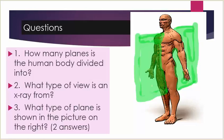Questions. Number one: how many planes is the human body divided into? Number two: what type of view is an x-ray from? Number three: what type of plane is shown in the picture on the right? There can be two answers for this.